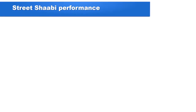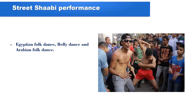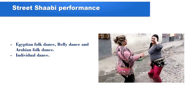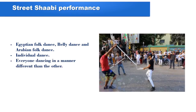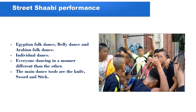Their dance steps are a mixture between Egyptian folk dance, belly dance, and a bit of Arab folk dance. The basic pattern in their dance is always individual, and each performer acts as if using his craft's tool in his dance performance. When you look at the performers at their parties, you will recognize that every one of them dances in a manner different from the others. Also, from the steps of each one, you can recognize his type of craft.